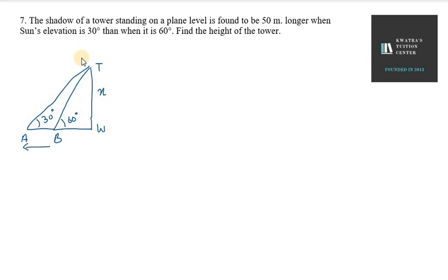So, here we extend this 50 meter. And it is 60 degree, meaning B and BW. So, I will mark Y. First of all, we have two 90 degree triangles. One is in triangle TWB.